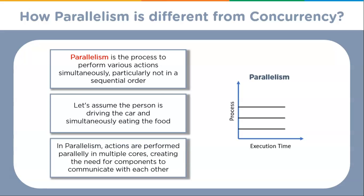Parallelism doesn't always result in faster execution time. In parallelism, actions are performed across multiple cores, creating the need for components to communicate with each other, whereas concurrent systems have a low communication overhead.